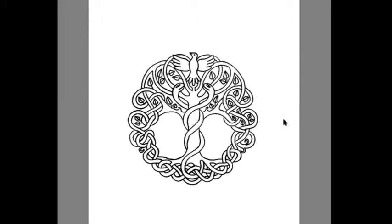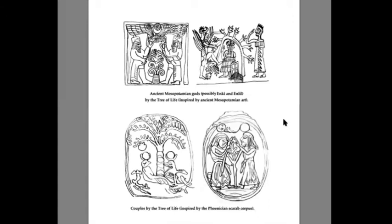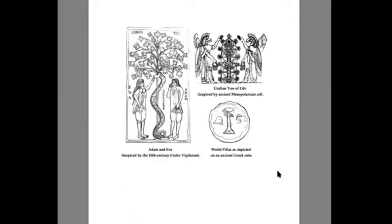Let's have a look at a few examples from ancient arts. Here we can see the world tree of life in Mesopotamian arts with the Mesopotamian gods. And here we can see some examples of Phoenician art. There are these two figures with the tree of life that kind of recall the biblical tree of life and Adam and Eve. Here we can see another example of the world tree of life with these winged Mesopotamian gods. And here we can see the world tree of life as the world pillar, which I will explain later, from an ancient Greek coin. And here we can see the biblical tree of knowledge, or tree of life, with Adam and Eve — this is from a medieval Bible.